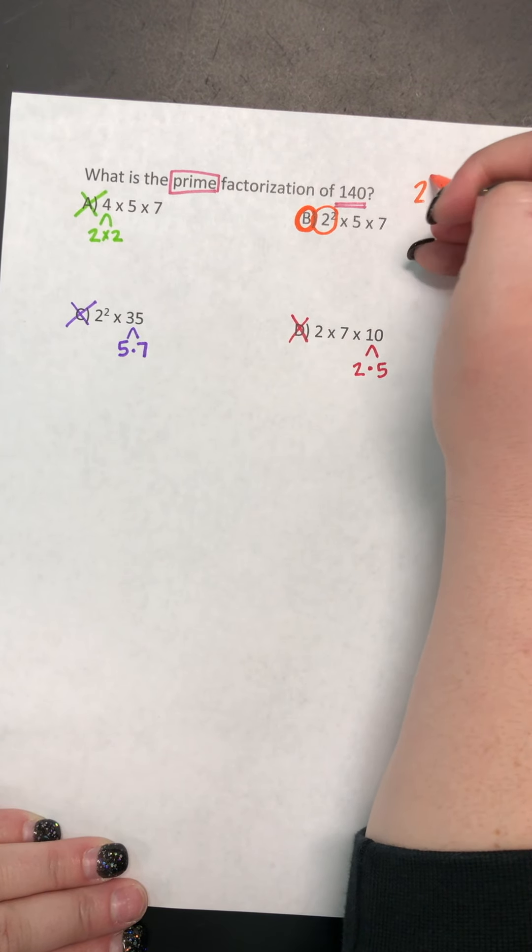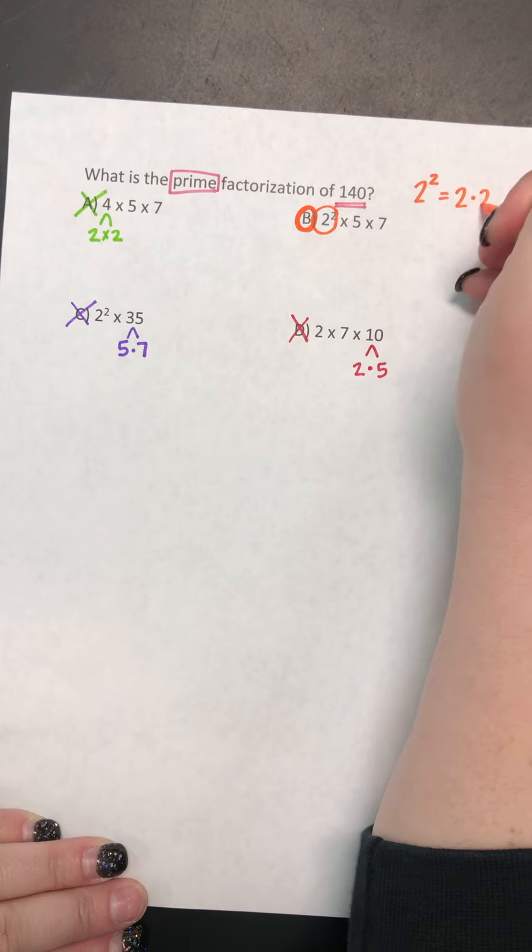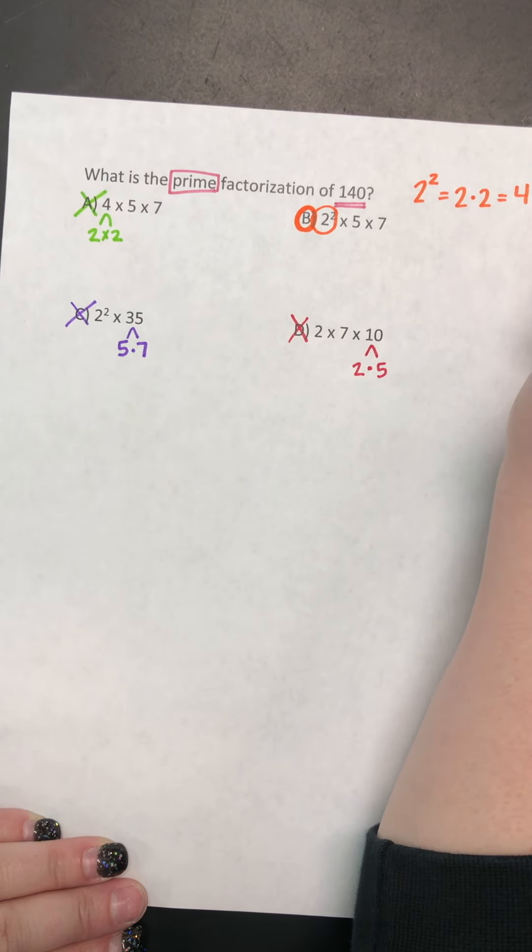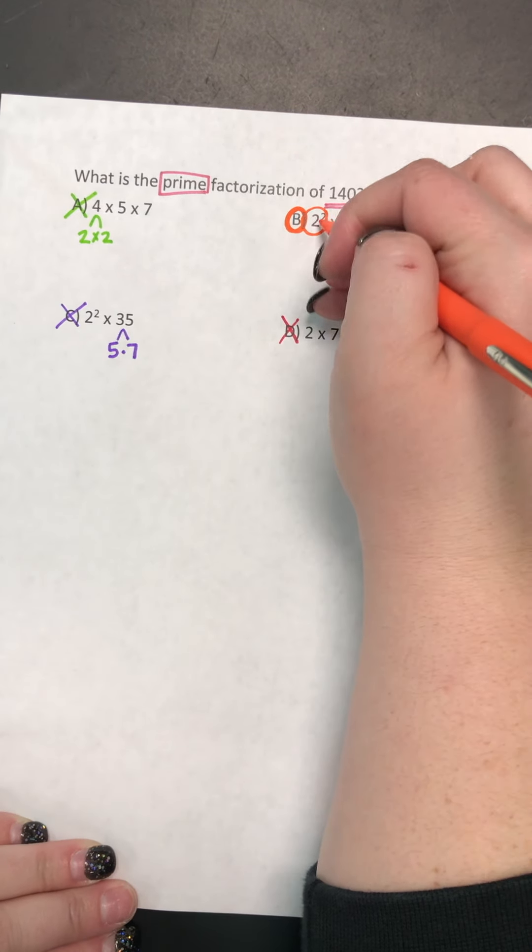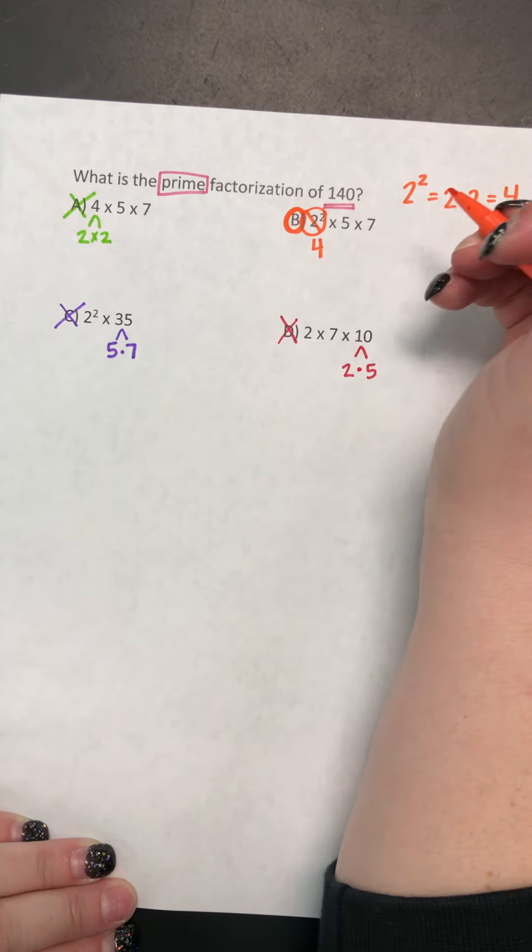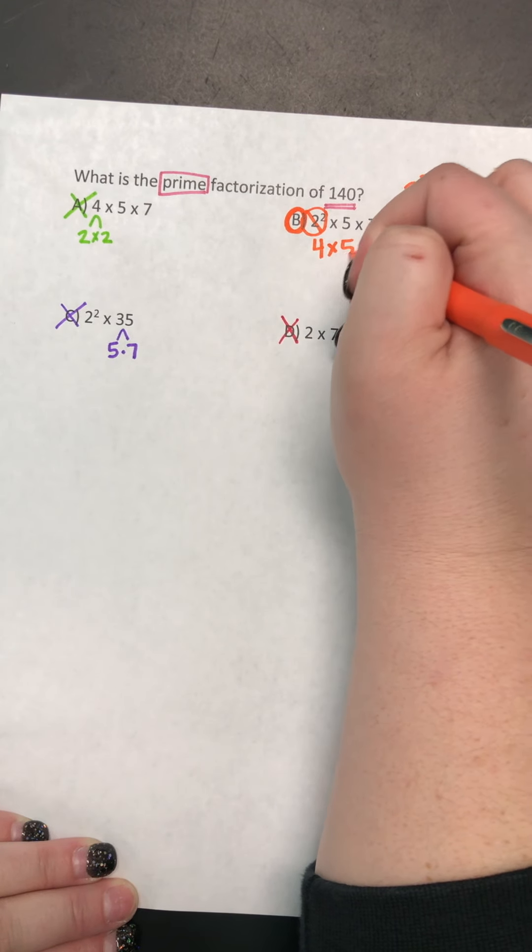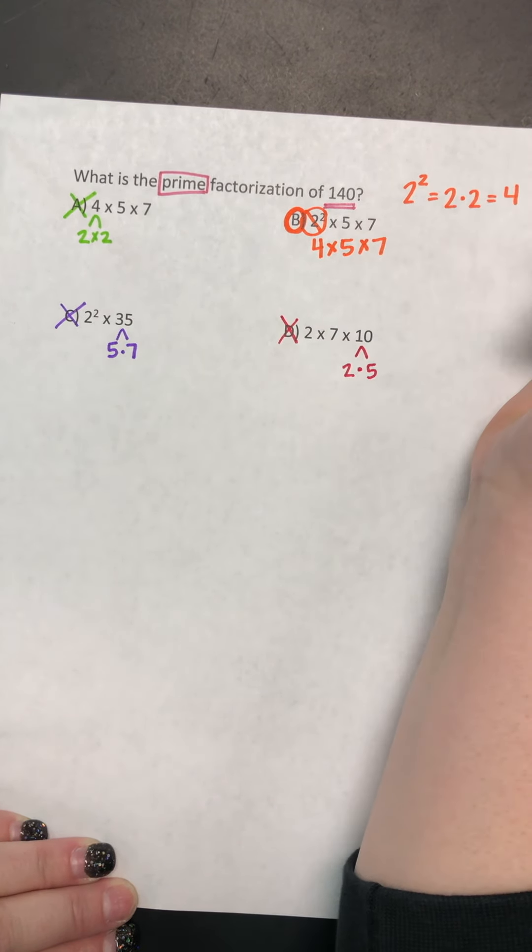So I'm going to start with 2 squared. And remember, 2 squared is like saying 2 times 2, which we know is 4. So instead of 2 squared, I'm going to mark it out and write 4. And then we have 4 times 5 times 7.